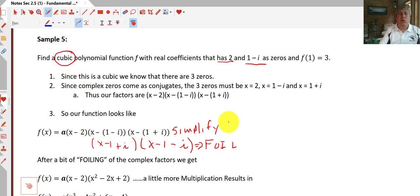We'll do another sample. We want to find a cubic polynomial function, f, with real coefficients that has 2 and 1 minus i as zeros, and f of 1 equals 3. So our zeros here are 2 and 1 minus i. They only gave us 2 of the zeros. Okay? Since it's cubic, we know it has three zeros, though. So we should have three. But one of them is complex. So since complex zeros come as conjugates, we know that they will come as 1 minus i and 1 plus i. So our factors are x minus 2 and x minus the quantity 1 minus i and x minus the quantity 1 plus i. So our function looks like this. So we have a times x minus 2 and x minus the quantity 1 minus i times x times the quantity minus the quantity 1 plus i.